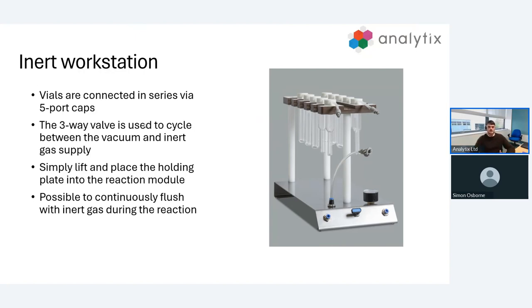After this we've proven that there's an inert atmosphere in all 10 vials. Then we can simply lift the top plate, that brown bit you can see with the vials hanging on, and that lifts off the base and fits directly into our reaction module. A lot of people like to keep their inert gas connected and throughout their reaction have nitrogen continuously flowing through all 10 vials. On the outlets that are connected to a gas bubbler, this way they can actually visualize that inert gas is continuously flowing through the vials and that we have an inert atmosphere.